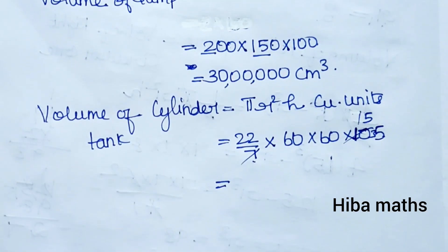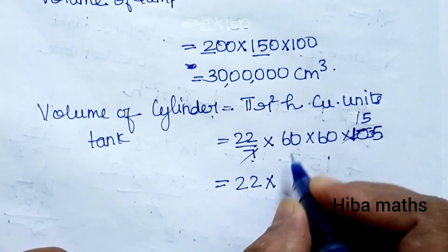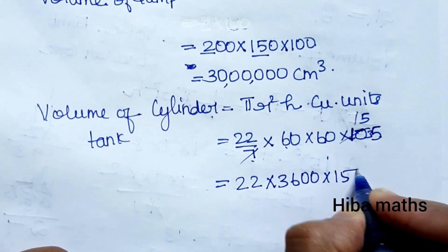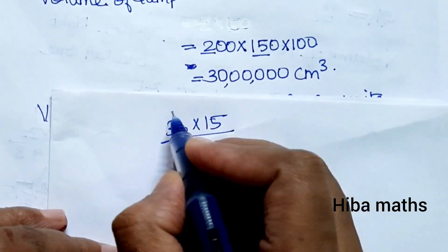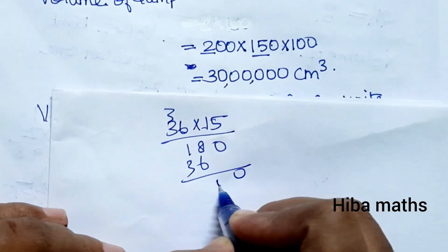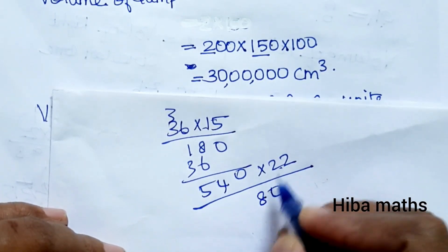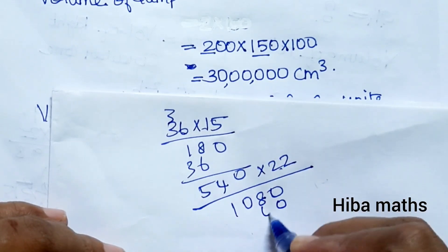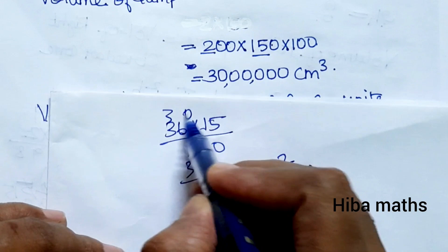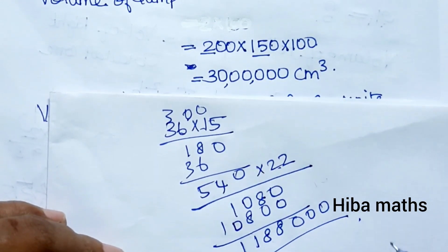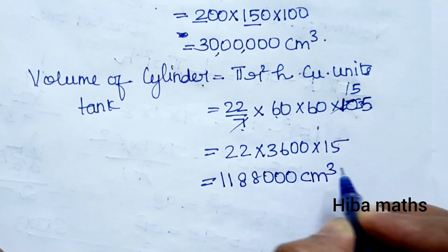Now solving: 105 divided by 7 gives 15, so we compute 22 × 60 × 60 × 15. Working through the multiplication gives the volume of the overhead tank as 11,88,000 cubic centimetres.